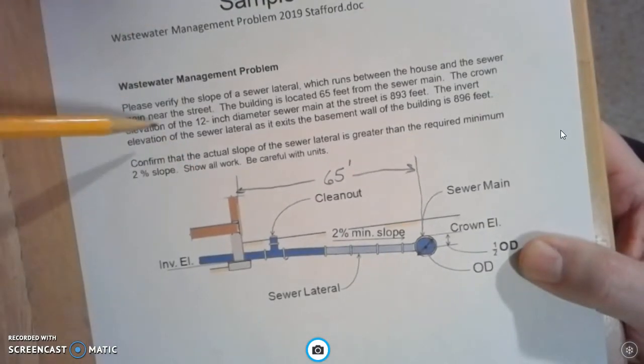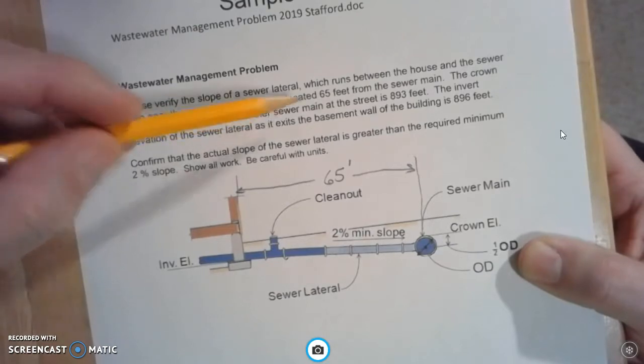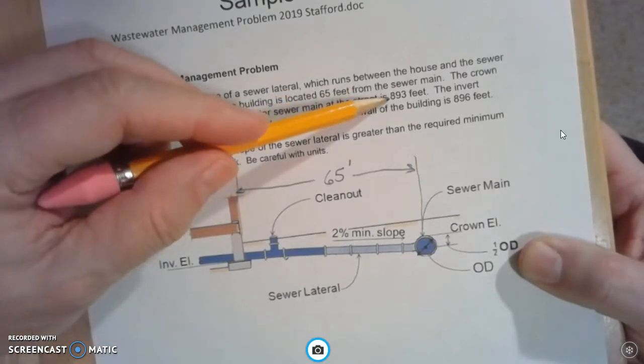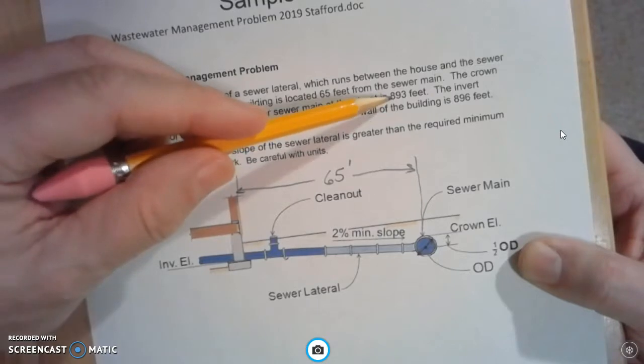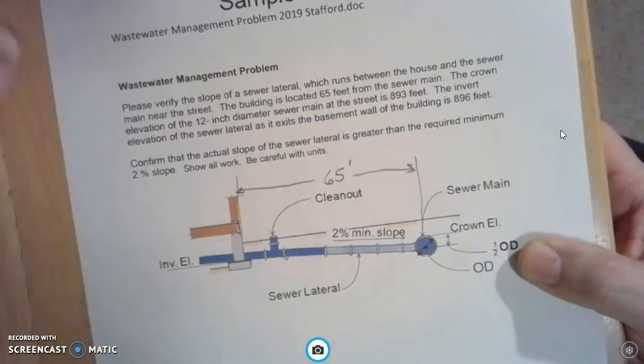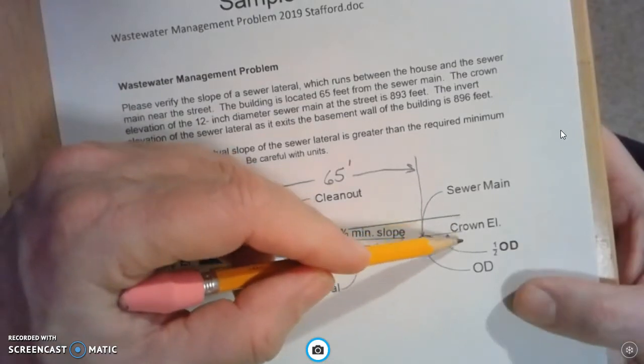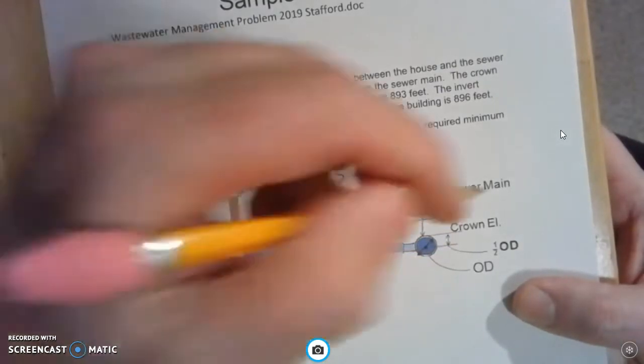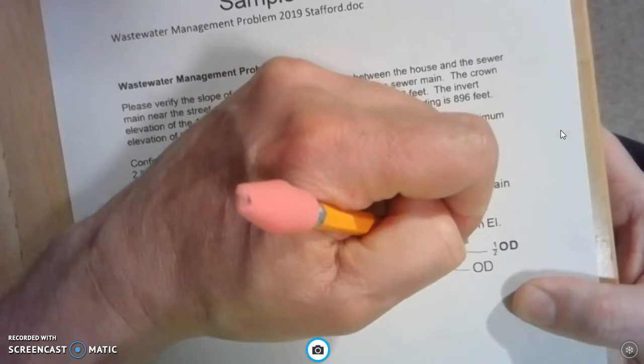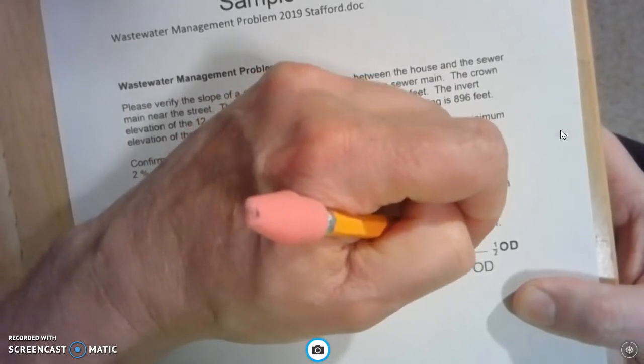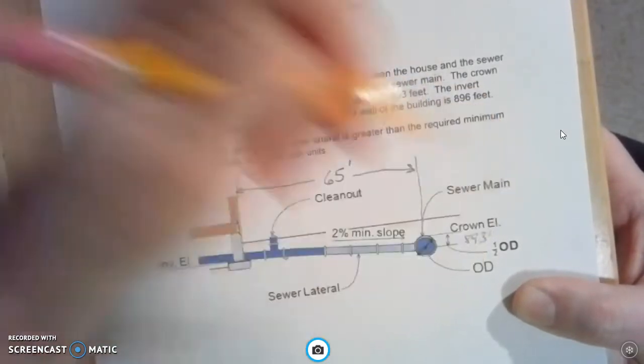The crown elevation of the 12 inch diameter sewer main at the street is 893 feet. So the crown elevation is right here, so I'm going to just write 893 feet right there.